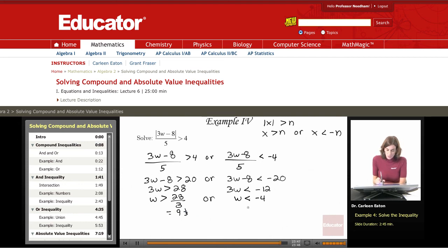So w is greater than 9 and 1/3, or w is less than negative 4. To graph this: negative 5, negative 4, negative 3, negative 2, negative 1, 0, 1, all the way to 9 and 1/3.